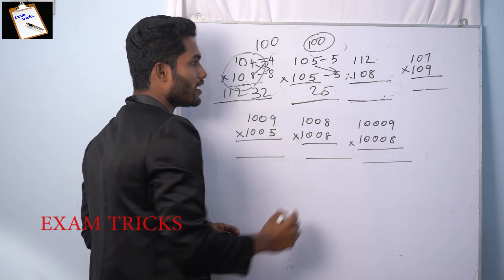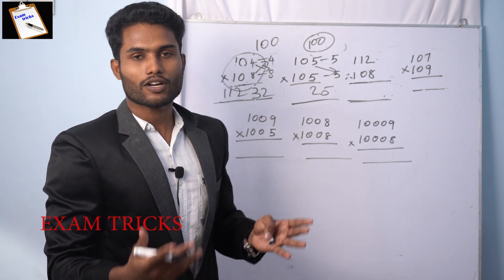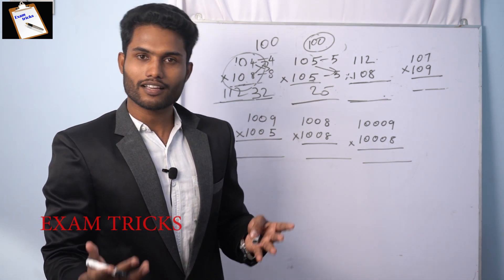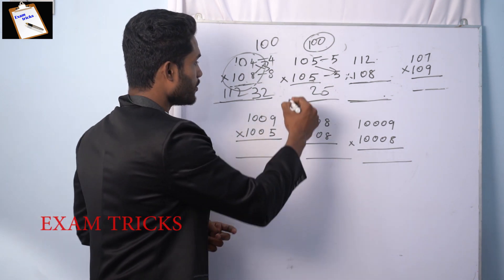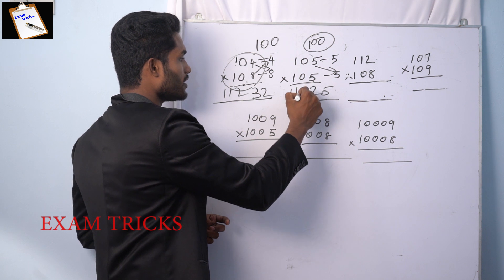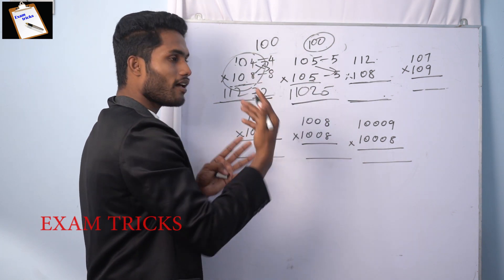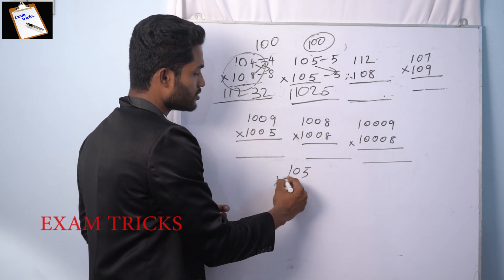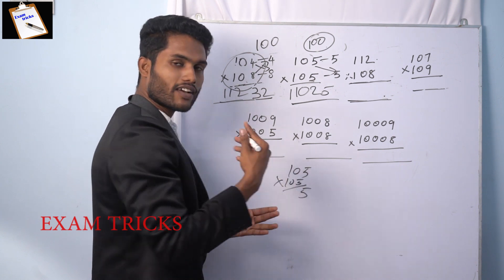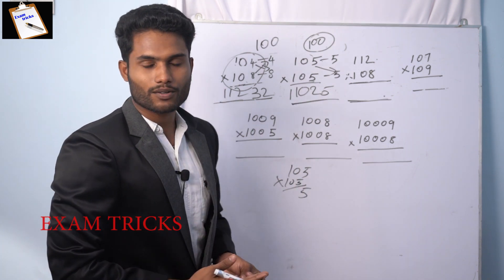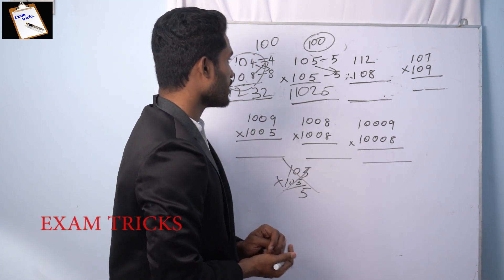In the cross, 105 plus 5 is 110. So our answer is 110,025. Normal calculation: 105 into 105 gives 5 times 5 equals 25. So we're doing this correctly.